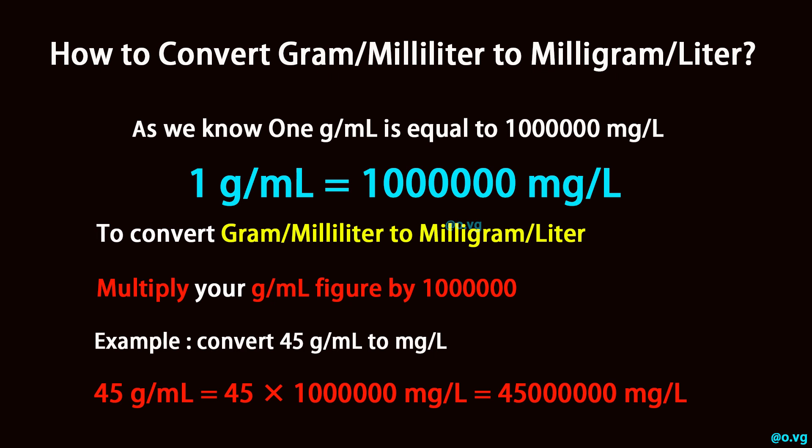To convert gram per milliliter to milligram per liter, multiply your gram per milliliter figure by 1 million. Example: convert 45 gram per milliliter to milligram per liter. 45 gram per milliliter equals 45 times 1 million milligram per liter, which equals 45 million milligram per liter.